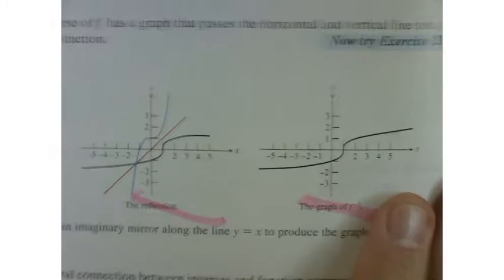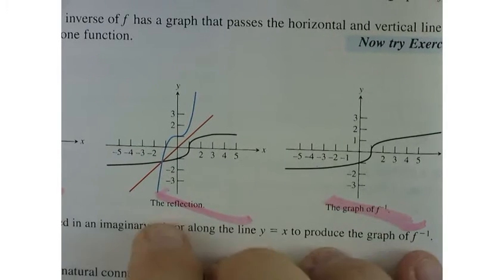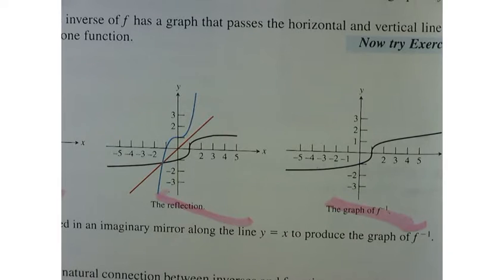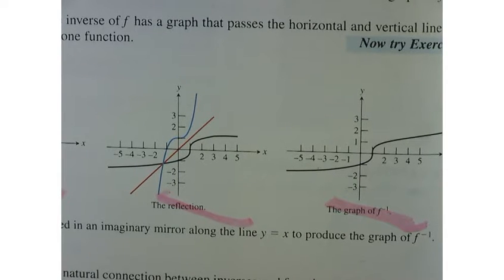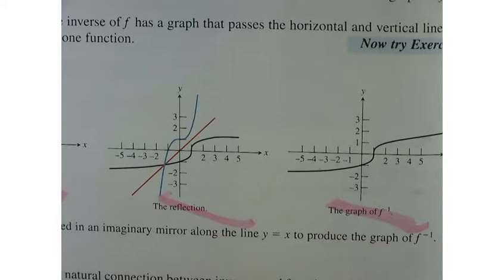So if I graph the f inverse, so this is f, the blue line. The red line is the diagonal or the identity function, and then the black line is the graph of the inverse.